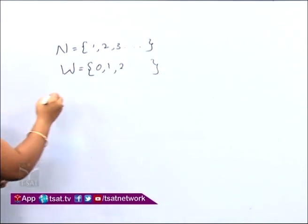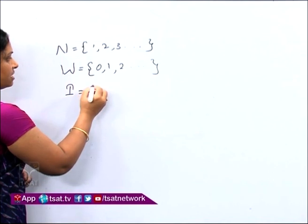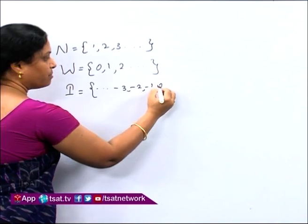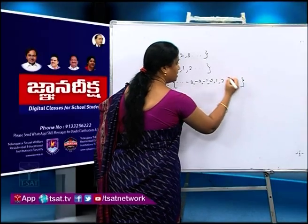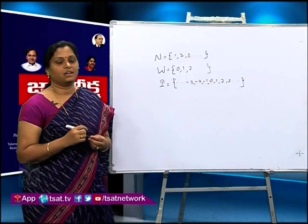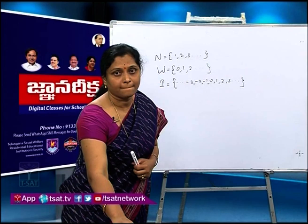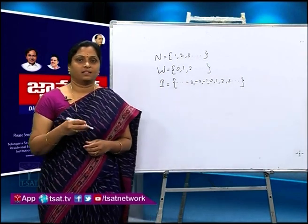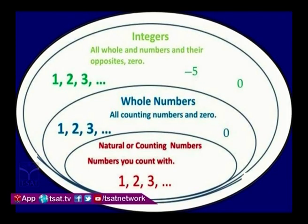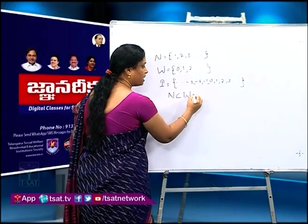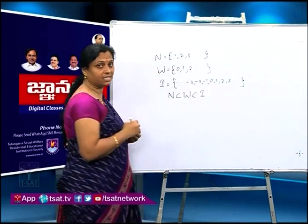Next, integers. We also learned about integers. Integers are negative numbers, positive numbers including 0, isn't it? If you see the slide, integers hold whole numbers, whole numbers hold natural numbers, isn't it? That means natural numbers are a subset of whole numbers, and whole numbers are a subset of integers, isn't it?